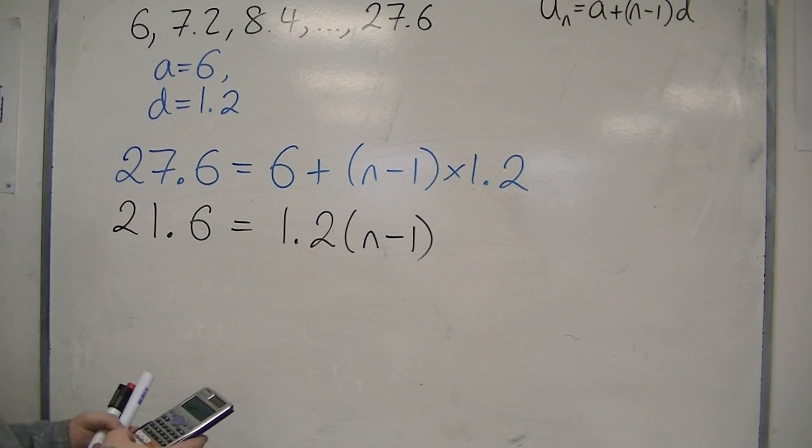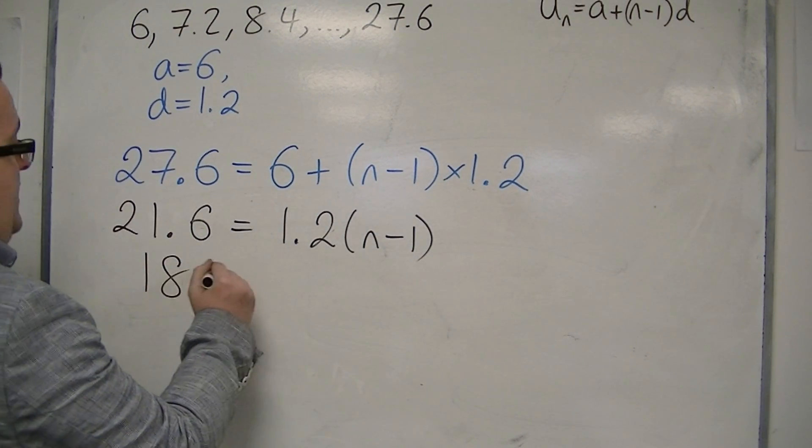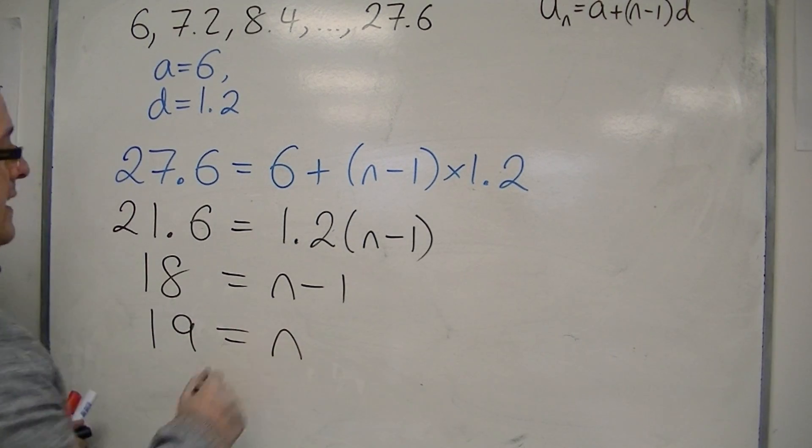So 18 equals n minus 1. Add 1 to both sides, so n equals 19.